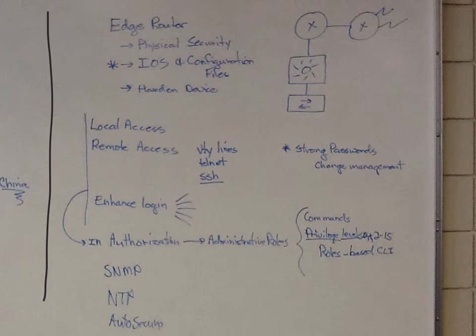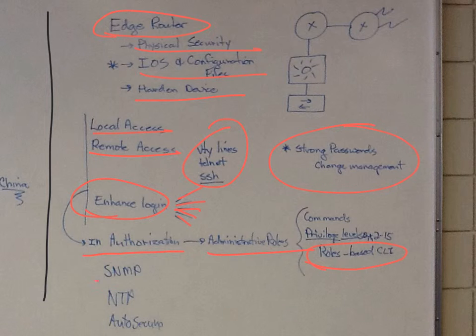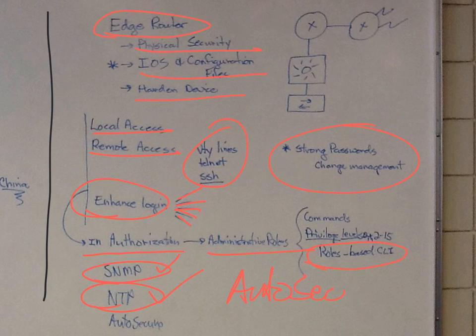This is some stuff from security, and so we'll talk about that separate. But that was in the notes of the same day, we talked about securing router, router at the edge, physical security, securing the iOS configuration, then hardening device, local access, remote access, these ways of getting in, enhanced login, timeouts, and all those things for login, authorization, administrative roles, and we talked about role-based CLI, talked about strong passwords, and then also in that chapter, we'll talk about simple network management protocol, time management, and then the last thing, auto secure. That's in the network security, done.